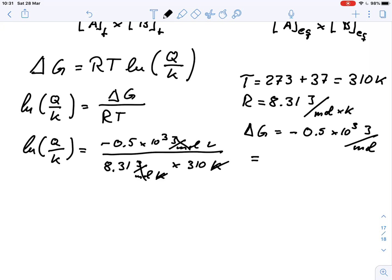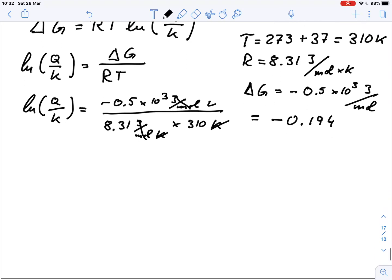And if we do this calculation, we get negative 0.194. So ln(Q over K) equals negative 0.194.